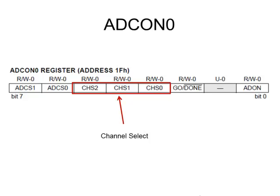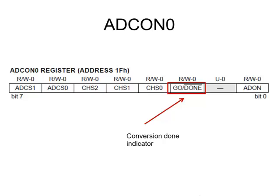These three bits are the channel select — we have eight possible analog channels, so these bits tell us which one we're looking at. The Go/Done bit serves two purposes: pulling it high tells the ADC to start a conversion, and when conversion is complete, the hardware resets the bit back to zero, indicating it's done. To do a conversion, write a zero then a one to this bit to create a low-to-high transition that starts conversion. Then you keep polling this bit and wait for it to go back to zero, which means the conversion is complete.